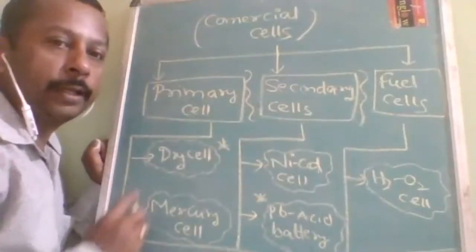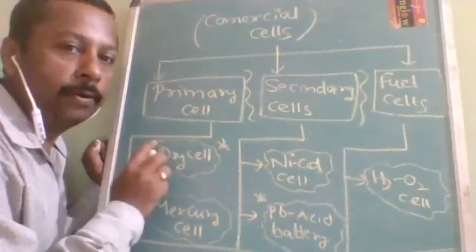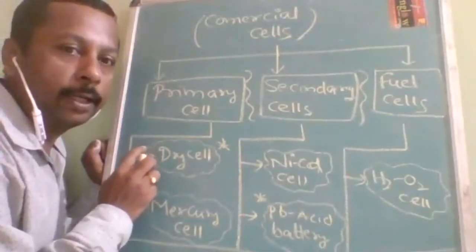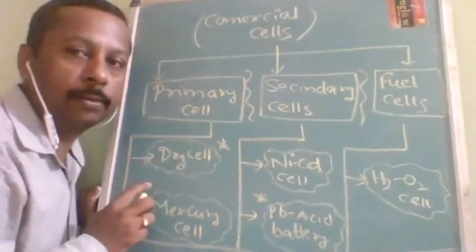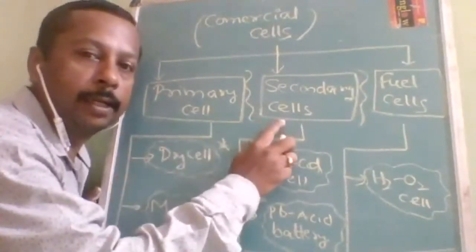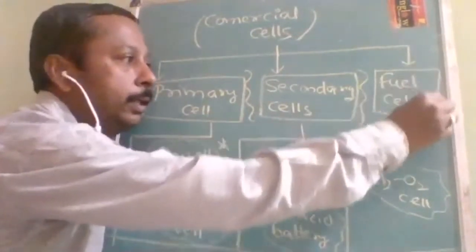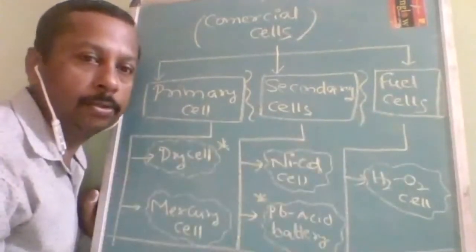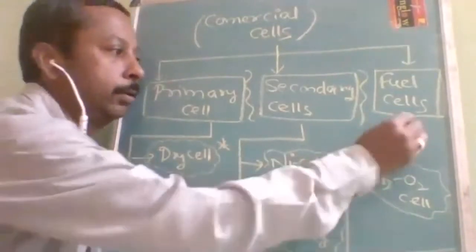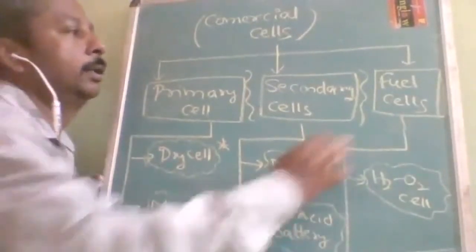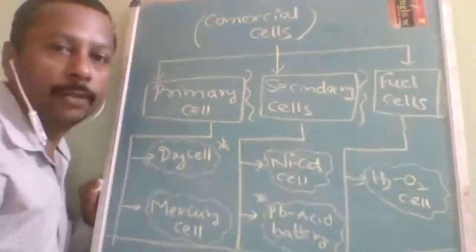If a cell can be used only once — after one use we cannot use it again — it is called a primary cell. That means it cannot be recharged or reused. If it can be recharged and reused, it is called a secondary cell. If it provides continuous energy even without charging through a combustion-type reaction, it is called a fuel cell.